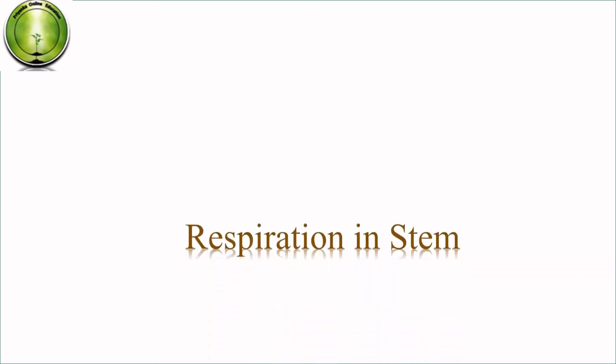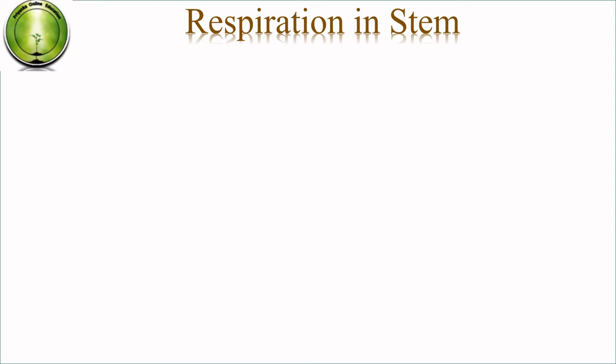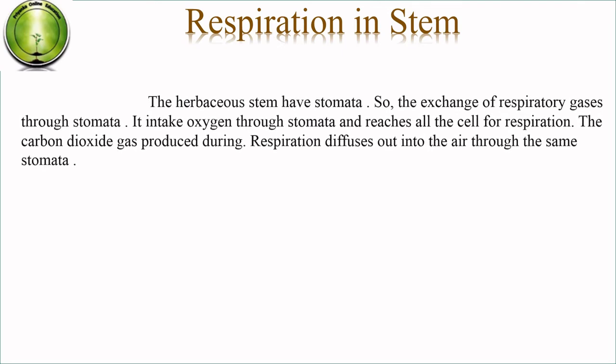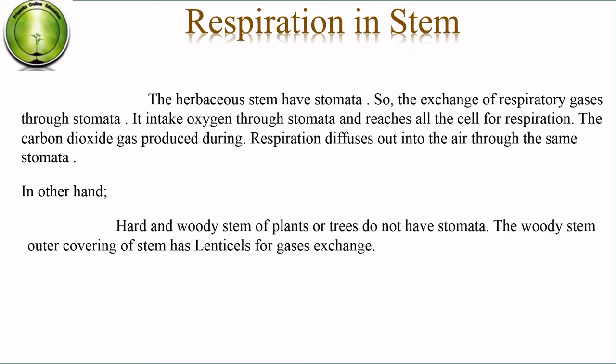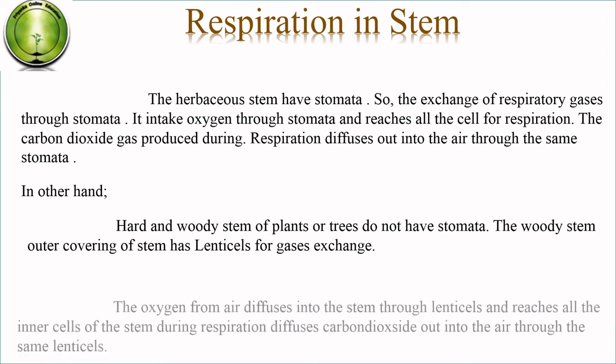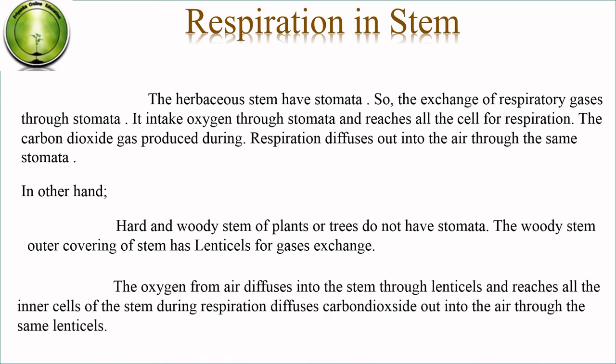Respiration in stem: herbaceous stems have stomata, so exchange of respiratory gases occurs through stomata. Oxygen is taken in through stomata and reaches all the cells for respiration. Carbon dioxide produced during respiration diffuses out into the air through the same stomata. On the other hand, hardened woody stems of plants or trees do not have stomata. The woody stem's outer covering has lenticels for gas exchange. Oxygen from air diffuses into the stem through lenticels and reaches all inner cells; carbon dioxide diffuses out through the same lenticels.